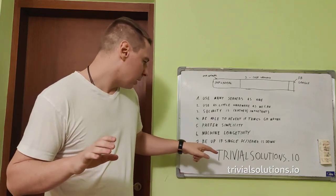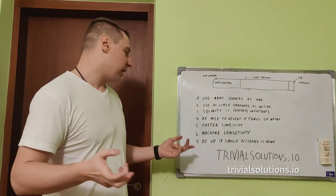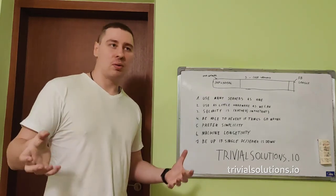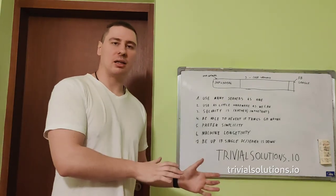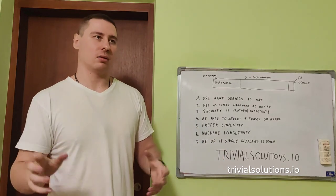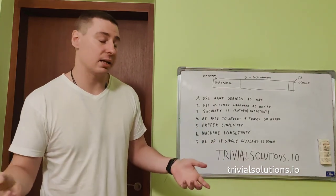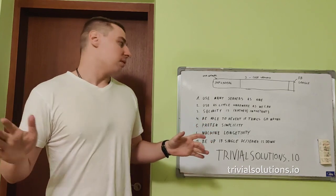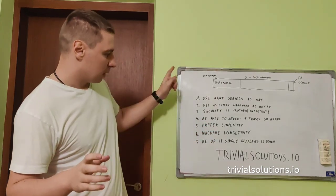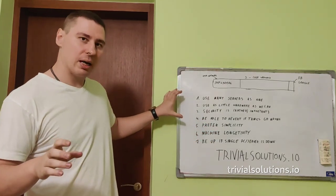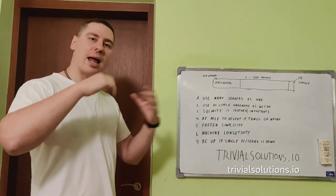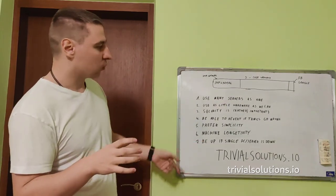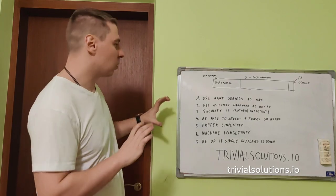The seventh point is high availability. We want to be up if a single data center is down or if a single server goes down. We want to keep on running. So this is what the high-end goals are of what we want to achieve when running infrastructure.